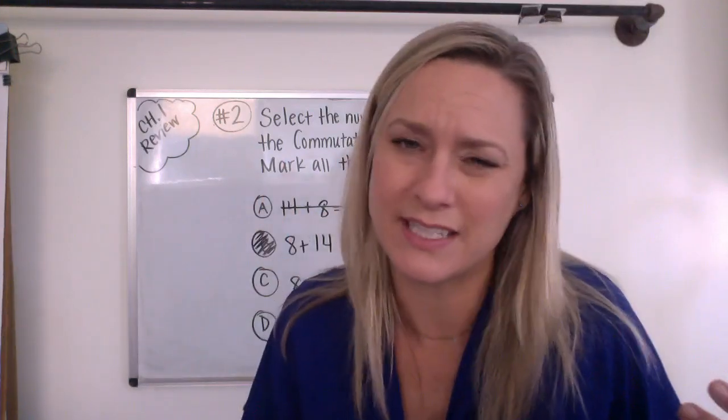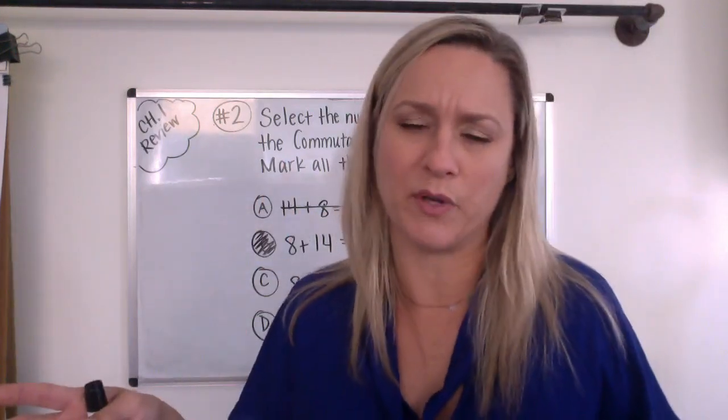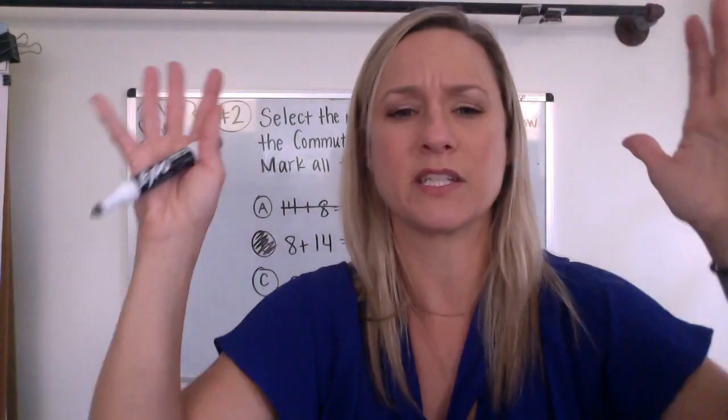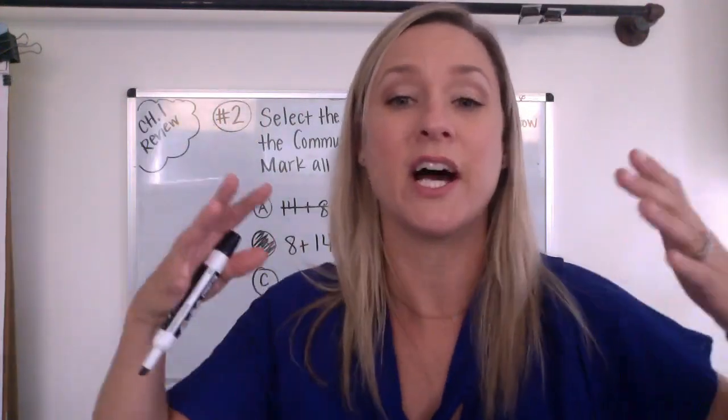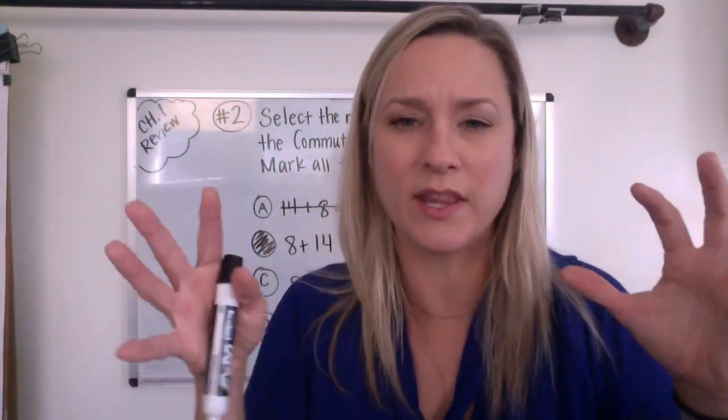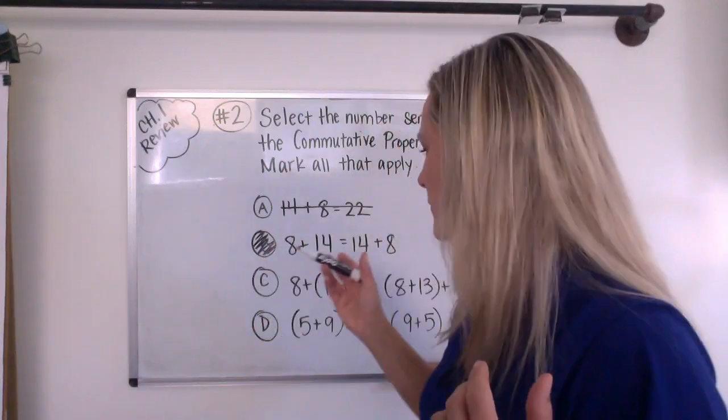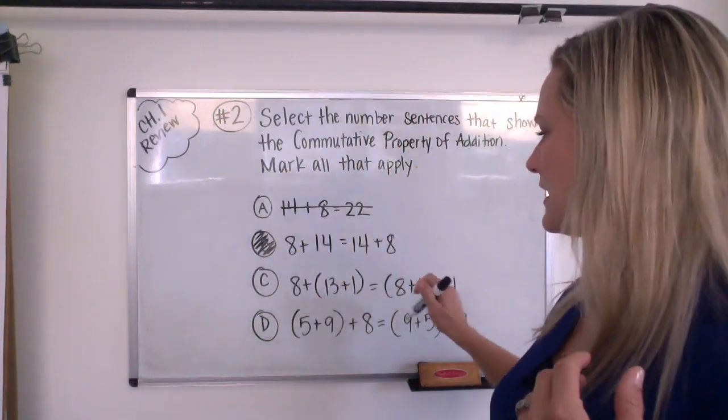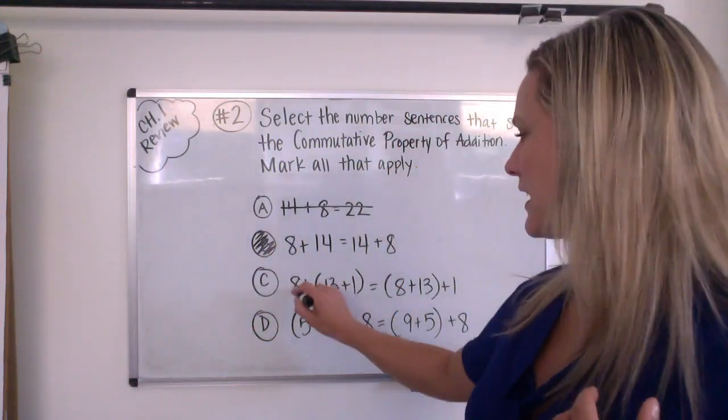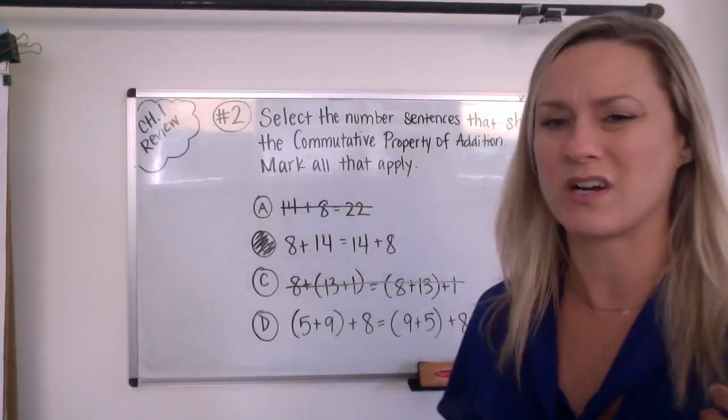So actually, this makes it the associative property. Associative, you can think about this. You associate with people, right? Or when you go to a store, you can ask for an associate. It's someone there in a group to help you, right? So this is the associative property. These are grouped together. So I'm going to go ahead and cross that one out.